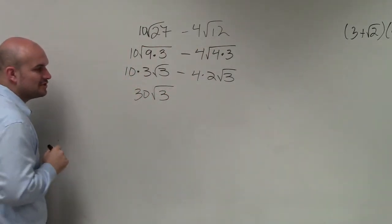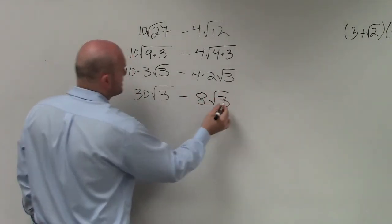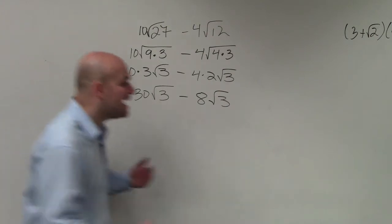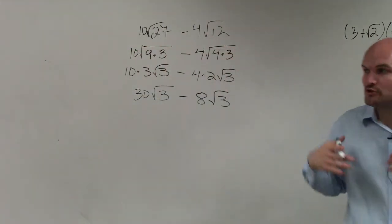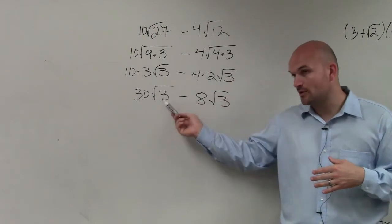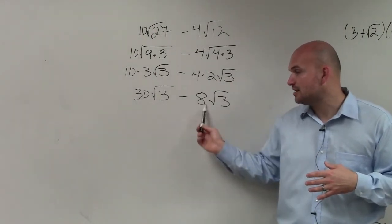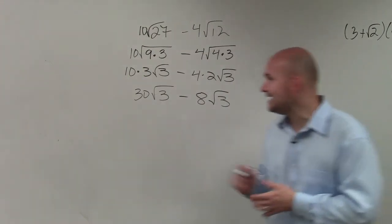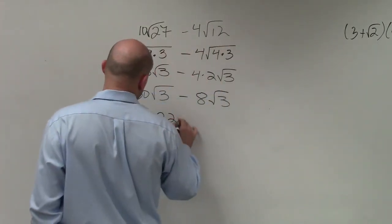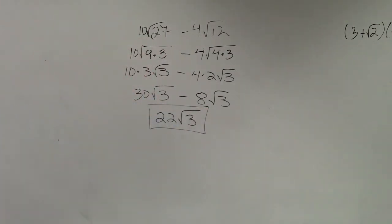So therefore, I have 10 times 3, which is 30, times the square root of 3, minus 8 times the square root of 3. Now, ladies and gentlemen, this is just like if I was doing 30x minus 8x. We are going to keep our radical expressions, and we're just going to subtract our coefficients, which would be 30 minus 8, which would be 22 square root of 3. And that would be our final answer.